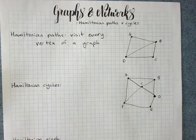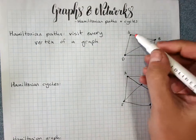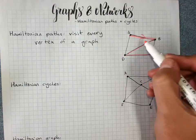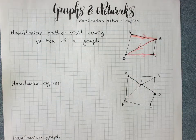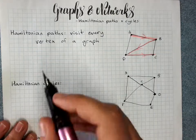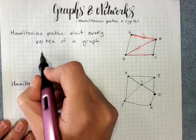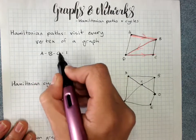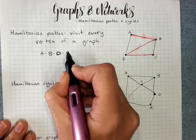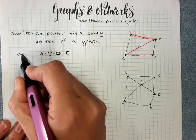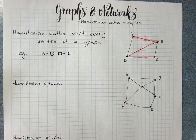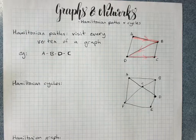For example, I could make a Hamiltonian path that went like that. I would write it A, B, D—oops, D came first—D, C. That's obviously not the only Hamiltonian path that I could draw on that graph, but that is one of them.